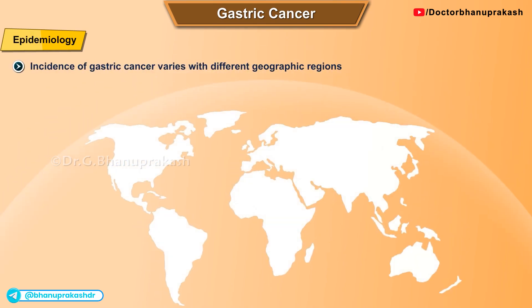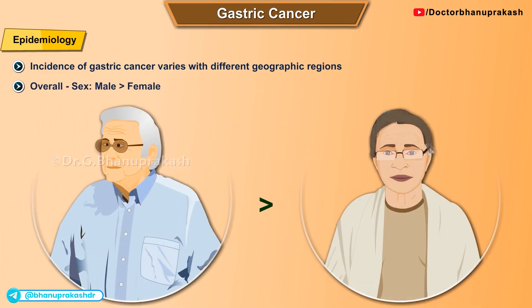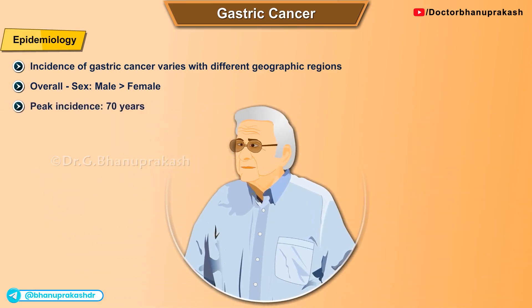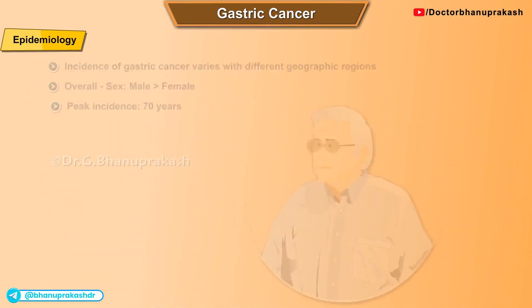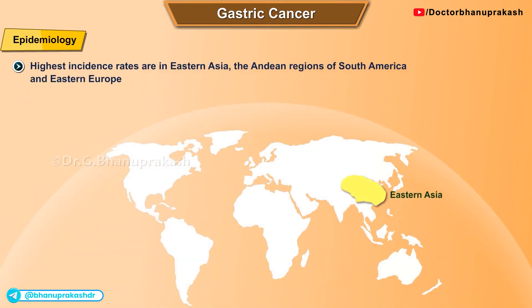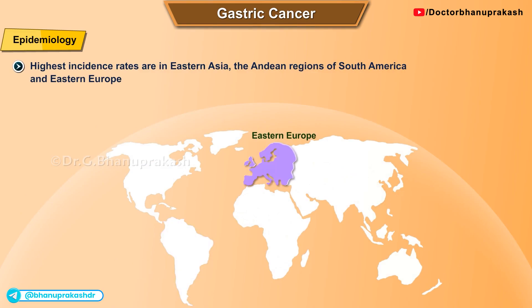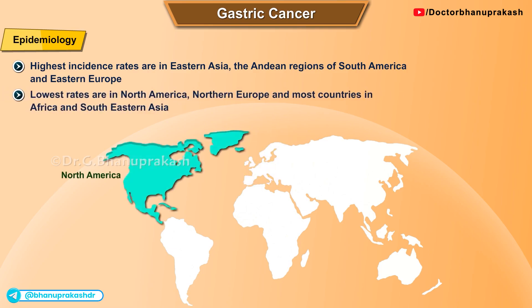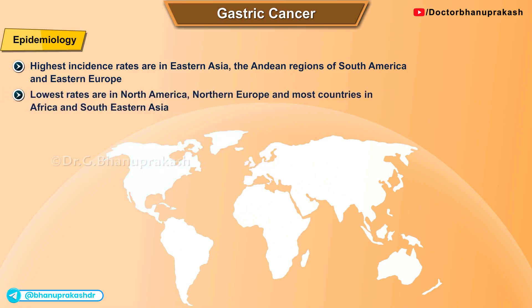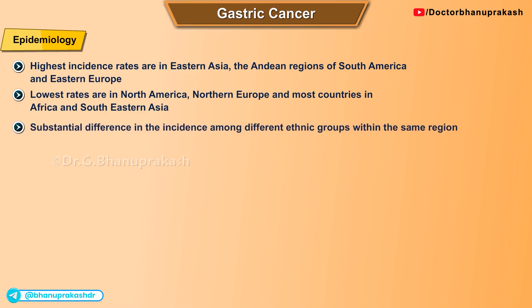The incidence of gastric cancer varies with different geographic regions. Overall, incidence is more common in males than in females, with a peak incidence at 70 years. The highest incidence rates are in eastern Asia, the Andean regions of South America, and eastern Europe, while the lowest rates are in North America, northern Europe, and most countries in Africa and southeastern Asia. There is also substantial difference in incidence among different ethnic groups within the same region.